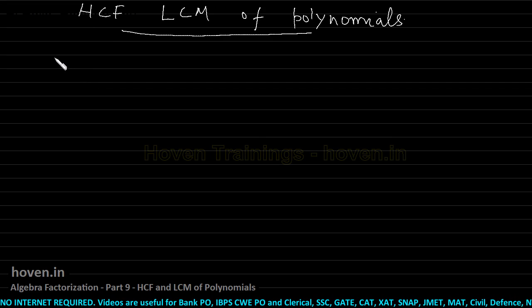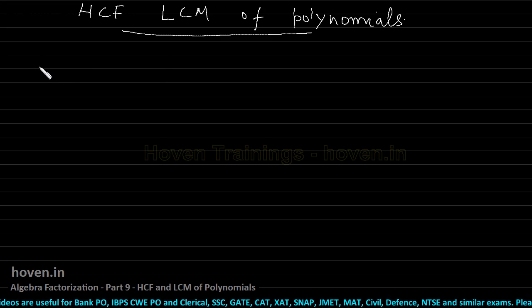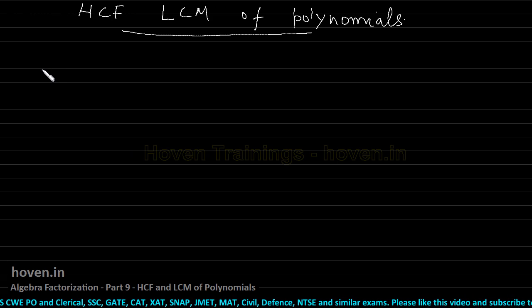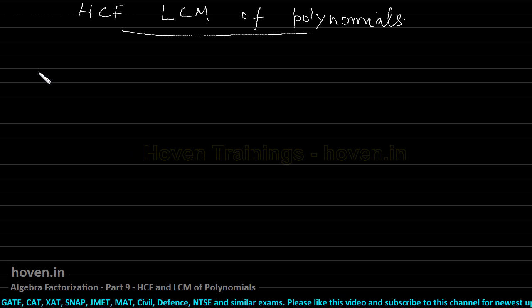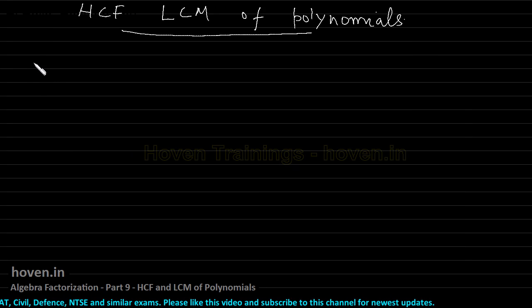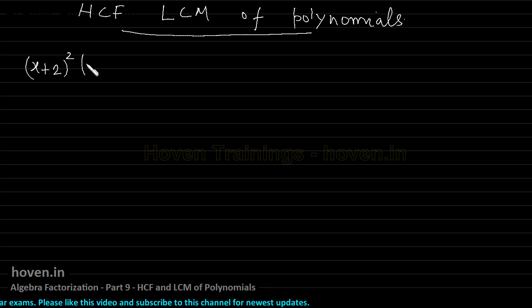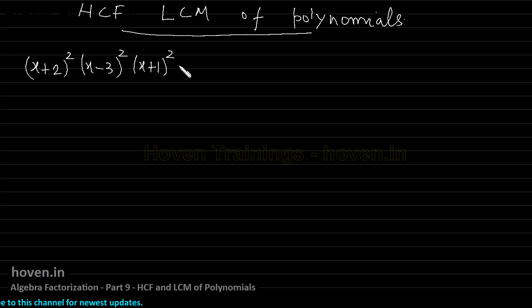I have found the best approach is to explain with the help of an example. The example I am taking is that of an already factorized polynomial. Usually you have to factorize it yourself first and then begin to find HCF or LCM. I am taking an already factorized polynomial so that I can come to the point as early as possible, without spending time on factorization. So I am taking an already factorized pair of polynomials.